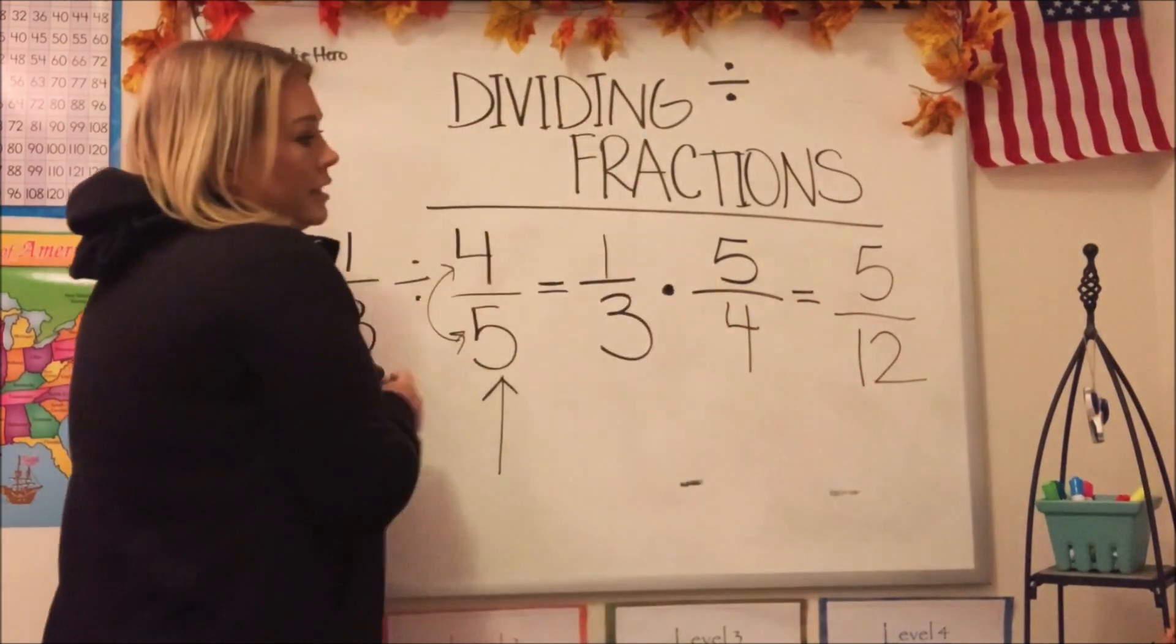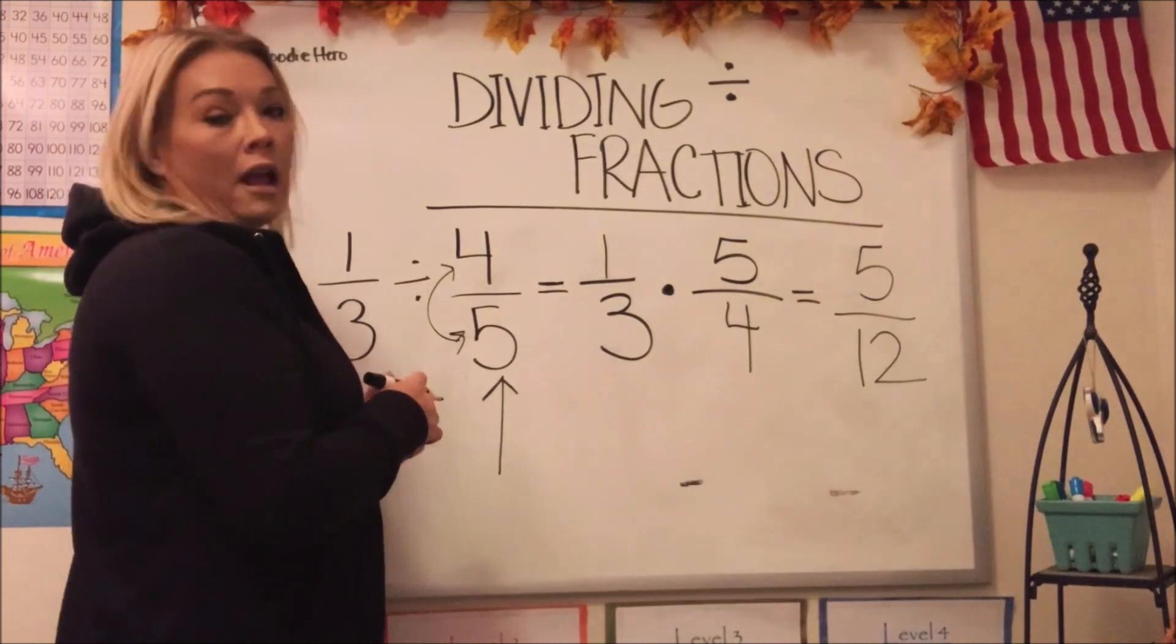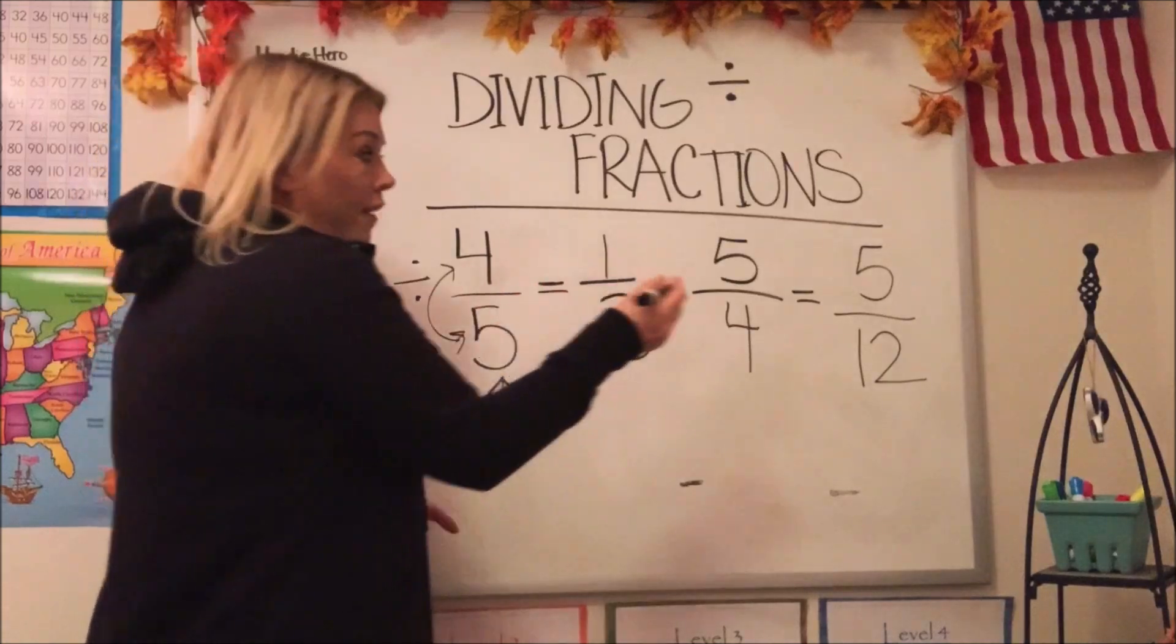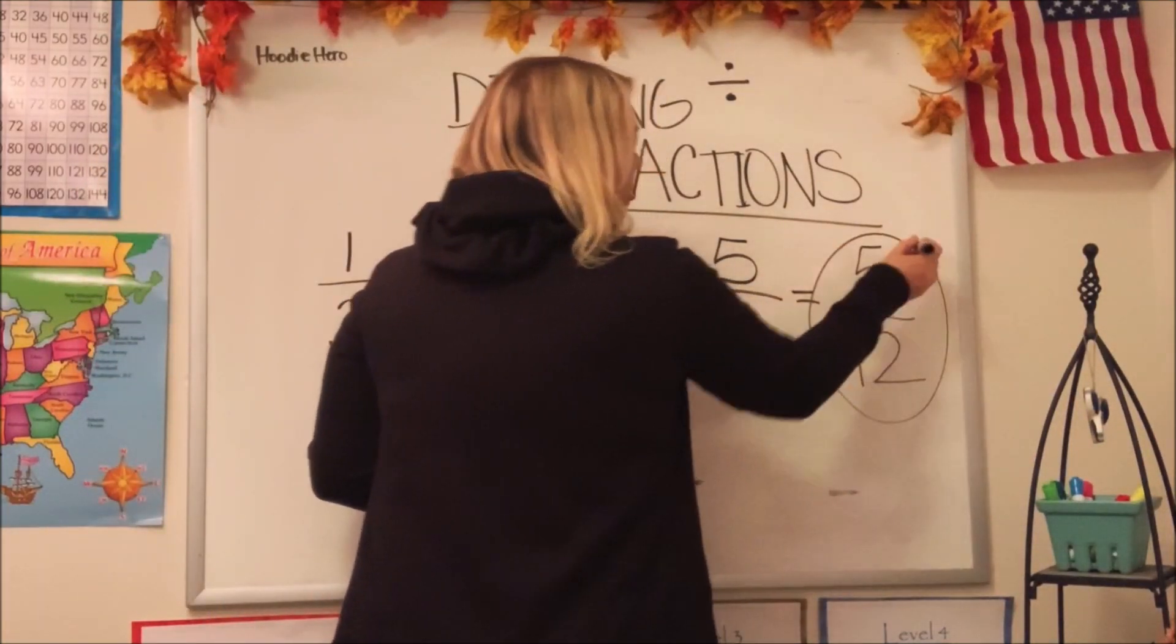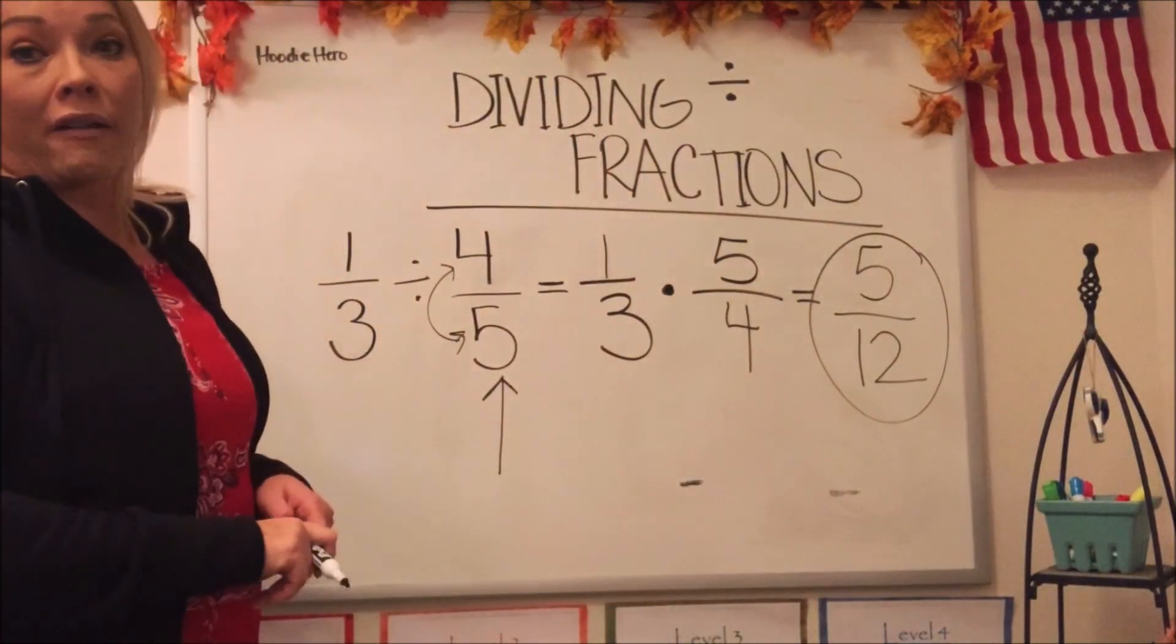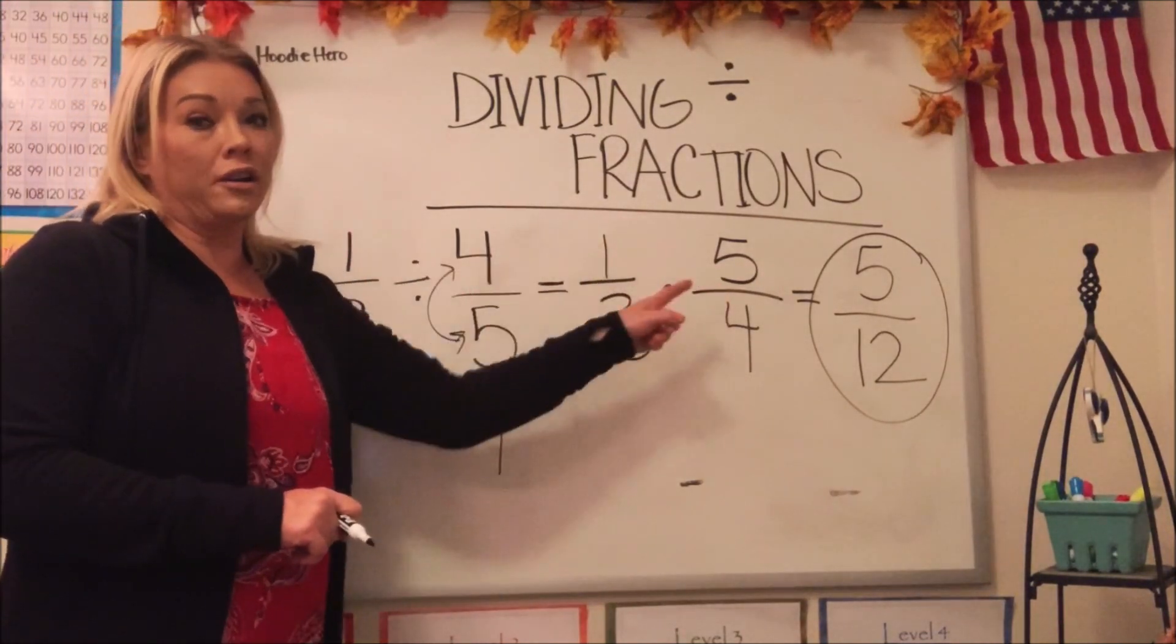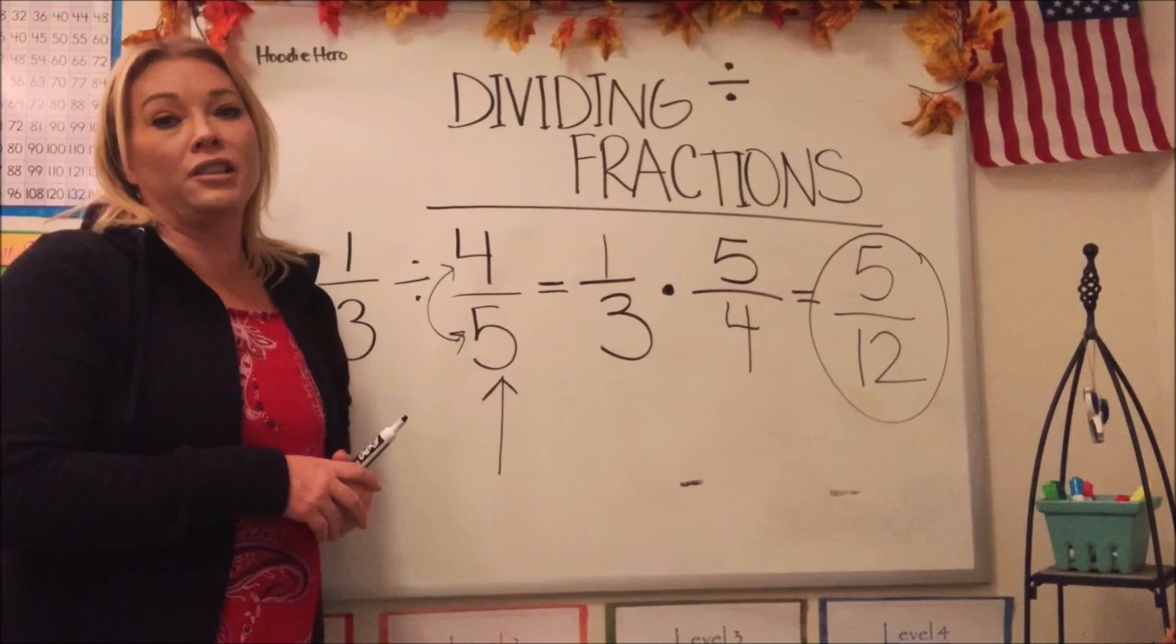We always check to see if we can simplify. And we can't. What's our big clue that we can't simplify on this one, guys? Five is a prime number, isn't it? So there we go. Our answer is five-twelfths. See? Very simple, straight across. I think you guys have got it. Let's do just one more.